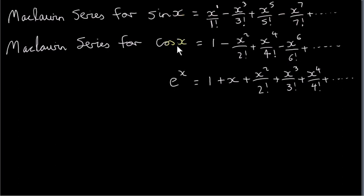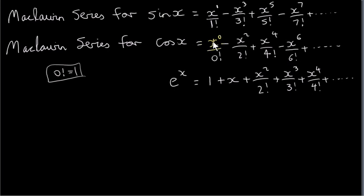Similarly, we have a Maclaurin series for cos of x. The first term is 1. Now, 1 can also be written as x to the power of 0 divided by 0 factorial, where 0 factorial is defined to equal 1. You can see that we have even powers of x and our factorial terms increase by 2. Also, the signs alternate: plus, minus, plus, minus, etc.